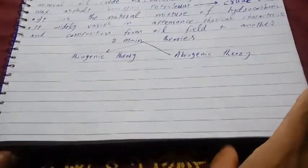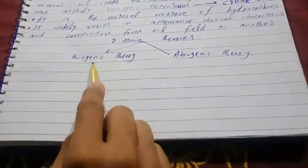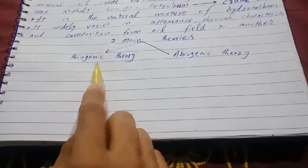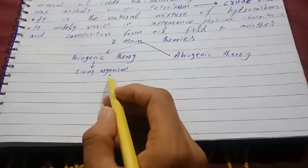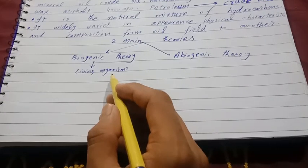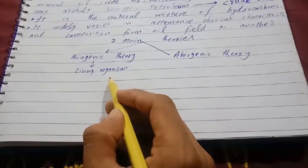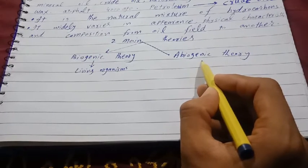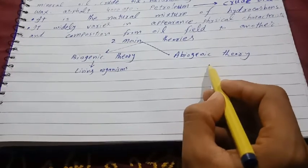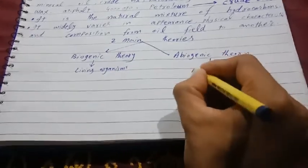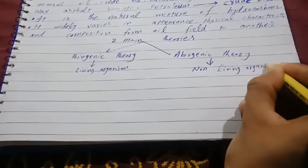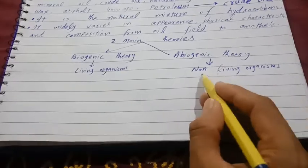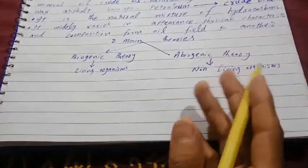According to biogenic theory, petroleum originated from living organisms buried under the earth over millions of years. Abiogenic theory suggests the origin of petroleum from non-living organisms or from inorganic material.